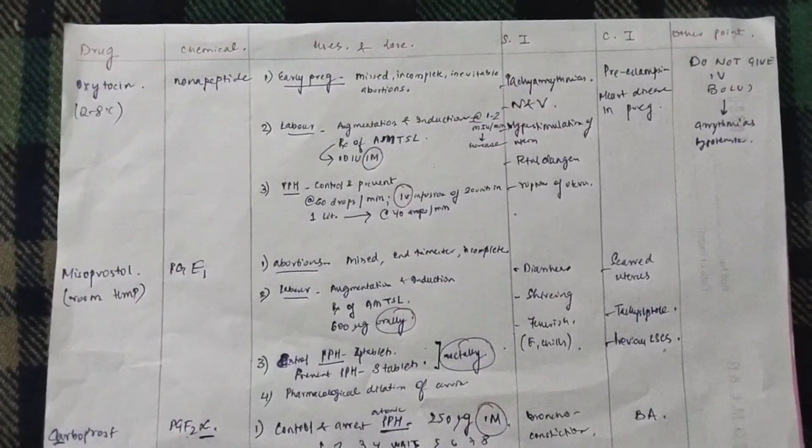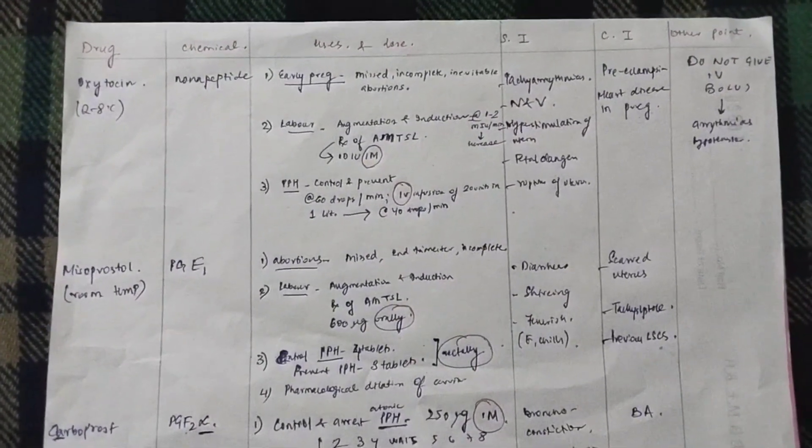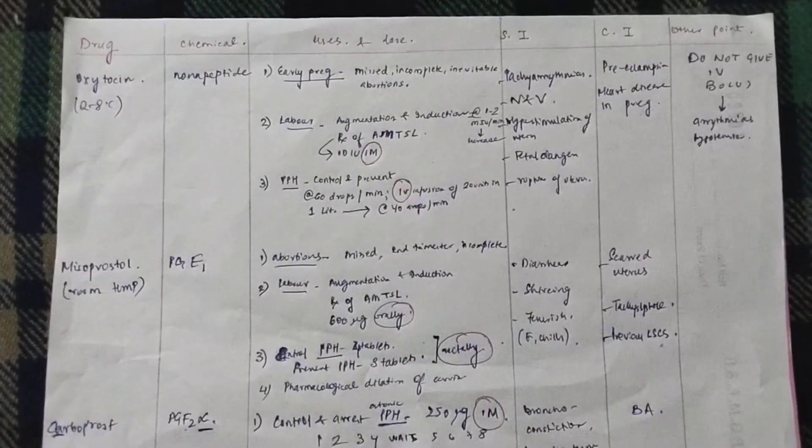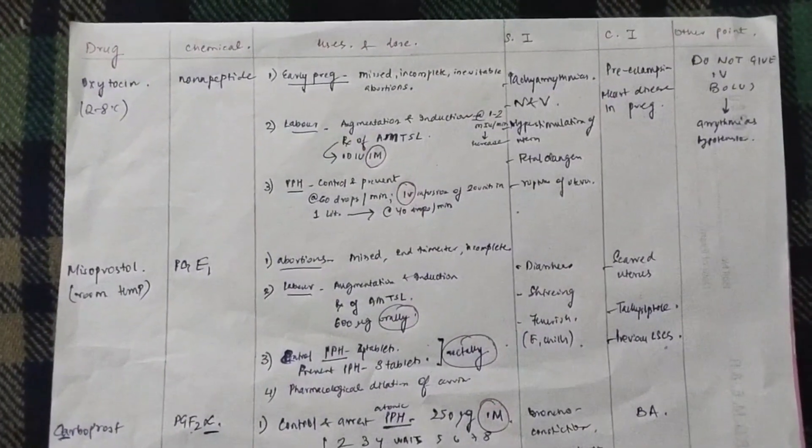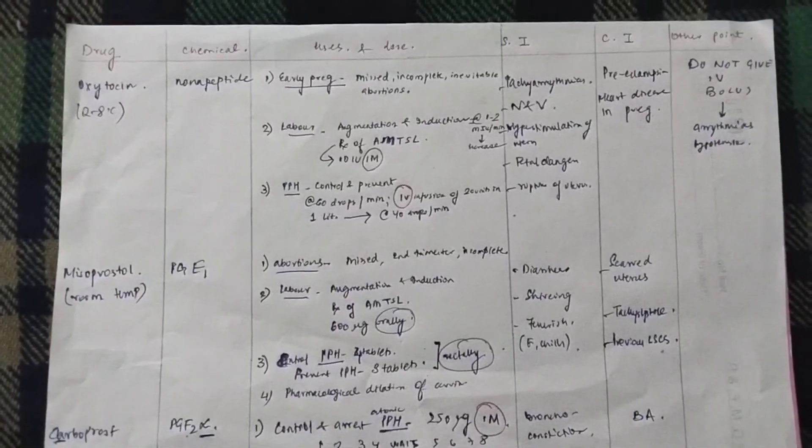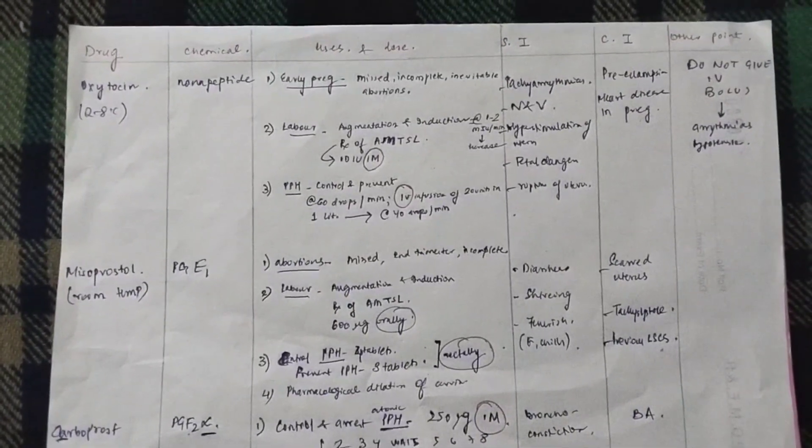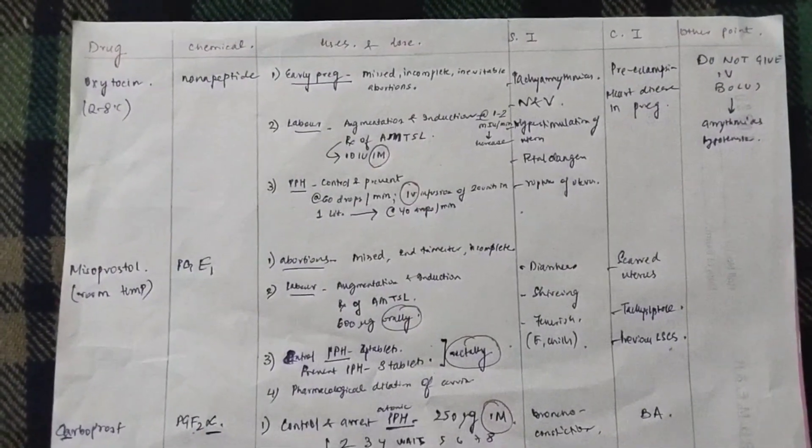That is oxytocin. Then, there are some prostaglandins, and then, there is methergin. You also have MgSO4, but that is a bigger drug. So, I will make a separate video for that. So, in this video, we basically are covering four drugs. That is oxytocin.